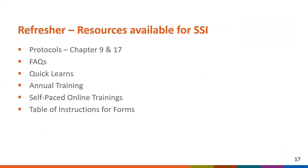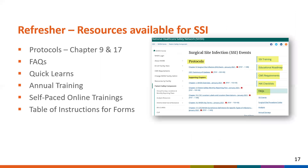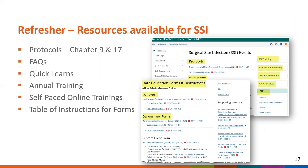Don't forget there are plenty of educational resources available to assist NHSN users in SSI surveillance. In addition to Chapter 9 and Chapter 17, there are FAQs, quick learns, annual training presentations, self-paced online trainings, and table of instruction documents to assist with filling out the denominator for procedure and SSI event forms. Remember to take advantage of these helpful resources.